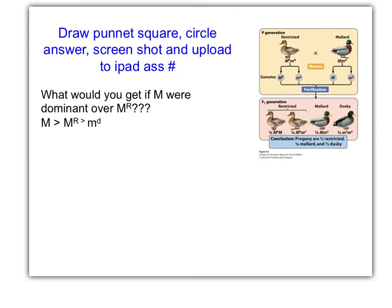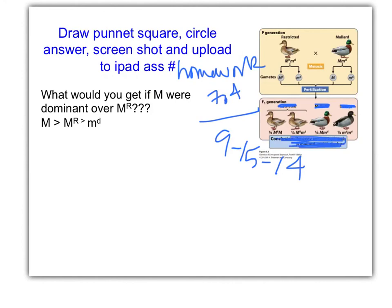And then please work on this. I'm going to set up a homework, iPad asks homework. What is it? 7.4 on today's, what is today? The 15th. So what would you get if M were dominant over MR? Right. So that means we're crossing this out. We're crossing this out. Remember, genotypes don't change. The cross is the cross. So this guy stays the same. This guy stays the same.